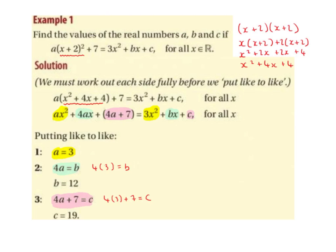Then we look at the 4ax — this term has a single x, not an x squared. And we look at the bx — again, this term has a single x, not an x squared. So we let 4ax equal bx. The x's cancel and we're left with 4a equals b. We just found that a equals 3, so we swap that a for 3, and 4 times 3 is 12. So b is equal to 12.